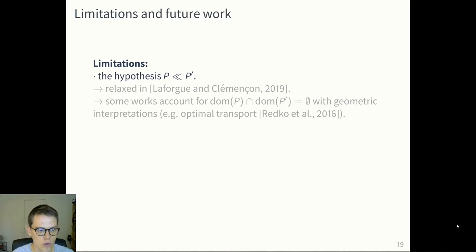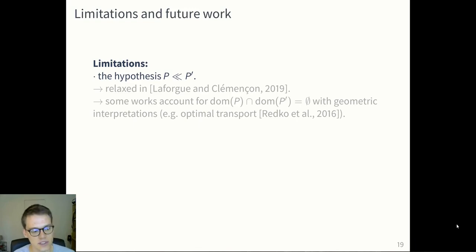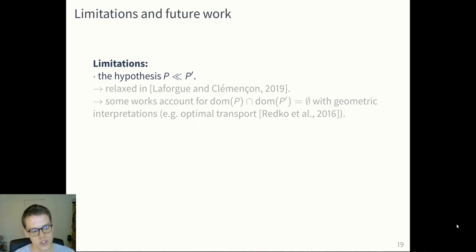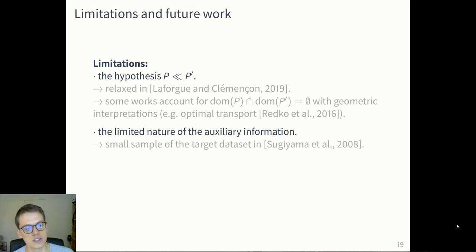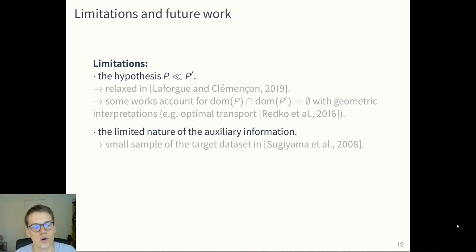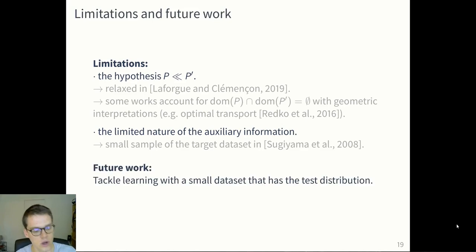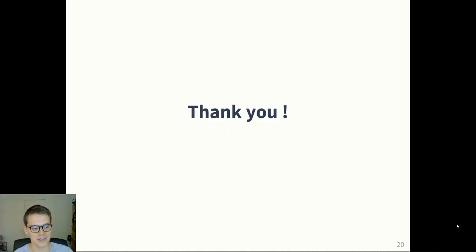To conclude, there are a few limitations. The first is the hypothesis that the domain of P is included in the domain of P-prime. There is work by Laforgue and Climanson that relaxes this, and other work using optimal transport for a geometric interpretation of the input space. Another limitation is the restricted nature of the auxiliary information. For example, Sugiyama considers a small sample of the target dataset as a different form of auxiliary information. In future work, we aim to tackle learning with a small dataset having the test distribution, moving closer to that setting. Thank you very much — let me know if you have any questions.